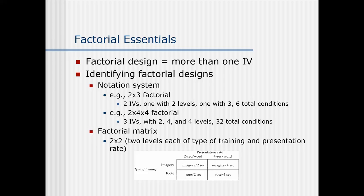In a two-by-four-by-four factorial, you have three independent variables. The first has two levels, the second has four levels, and the third has four levels. That has a total of 32 conditions, which you'll probably only see in memory research or some type of experimental laboratory research. That's what the notation system means.